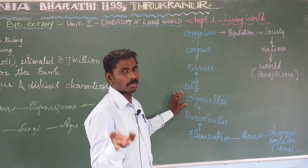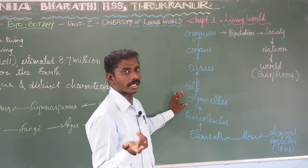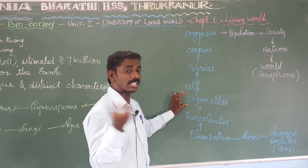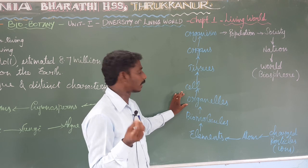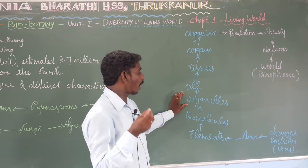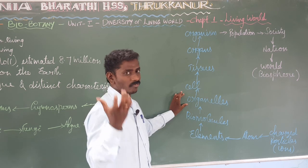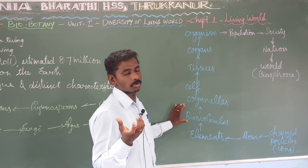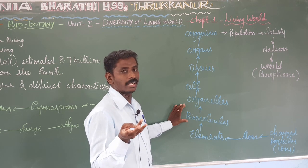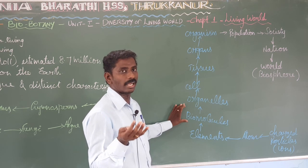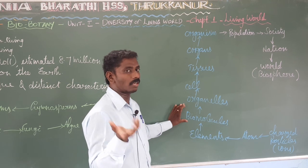Cell organelles include: nucleus, endoplasmic reticulum, chloroplast, mitochondria, Golgi bodies, and lysosome — many cell organelles are formed. Biomolecules are made of elements: carbon, hydrogen, oxygen, and nitrogen.